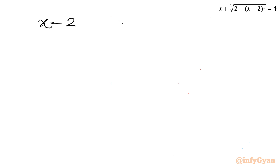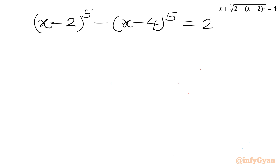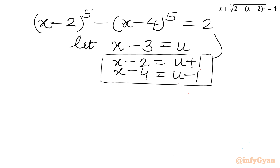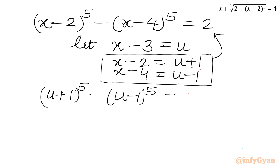Let us rearrange the terms. So I can write (x minus 2) whole power 5 minus (x minus 4) whole power 5 equals 2. Now we can use the substitution x minus 3 equals u. From here, x minus 2 equals u plus 1, and x minus 4 equals u minus 1. Substituting these gives us (u plus 1) whole power 5 minus (u minus 1) whole power 5 equals 2.